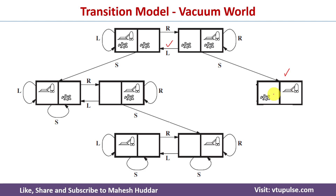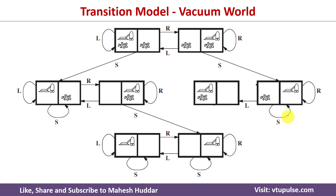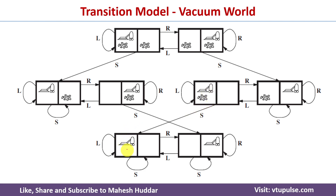When we apply Right to that state, the agent is already at the right side so the state remains the same. When we apply Suck — since location B is dirty and the agent is present there — the agent sucks the dirt and location B becomes clean. From this new state, applying Right remains the same, applying Suck remains the same. Applying Left moves the agent to location A. From that state, applying Right moves the agent back to the right, Left keeps the same state, and applying Suck — since location A is dirty — takes us to a new goal state. This is how the complete transition model looks.